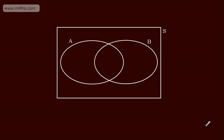In this video, we're going to look at using Venn diagrams in probability. Here is a Venn diagram. S stands for the sample space, so all the probabilities will be somewhere in the sample space and they must equal up to 1. This is event A, and this is event B.